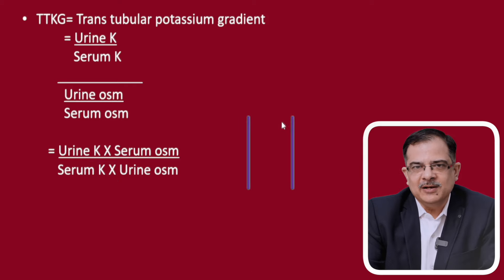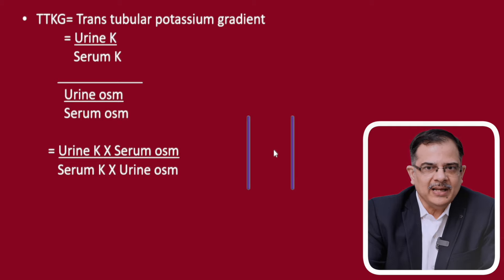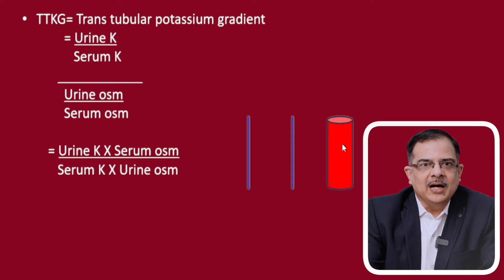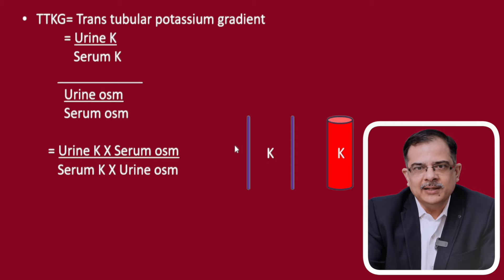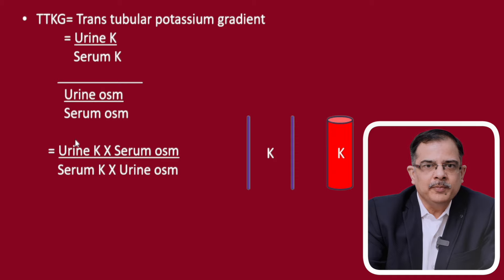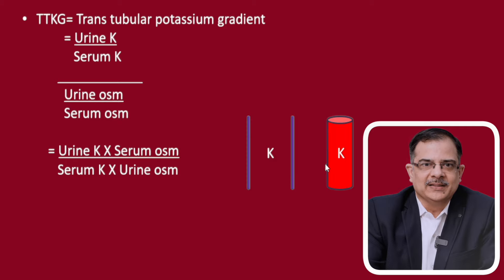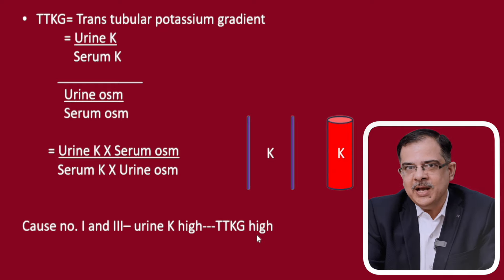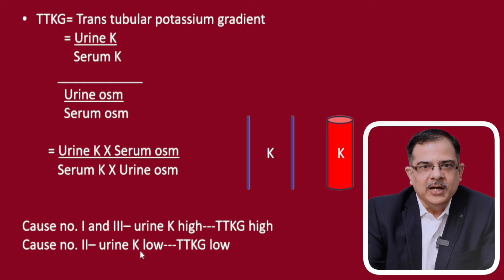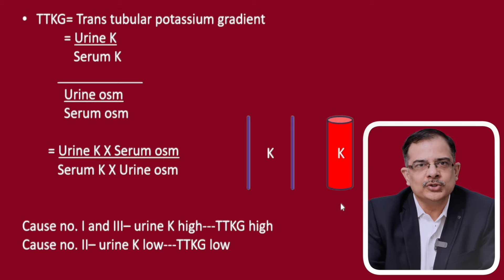The TTKG is the gradient between the collecting tubule and its capillary. If urinary potassium is more, this gradient will be more; if urinary potassium is less, this gradient will be less. So for cause one and three, urinary potassium is high and TTKG will be high. For cause two, urinary potassium is low and TTKG will be low. Based on this we will use a flowchart to make an accurate diagnosis of high potassium. First, always rule out pseudo-hyperkalemia, which can occur when a blood sample reaches the lab late causing RBC hemolysis, or due to a tourniquet effect where potassium is released from the muscles. Once ruled out, we then look at the TTKG.